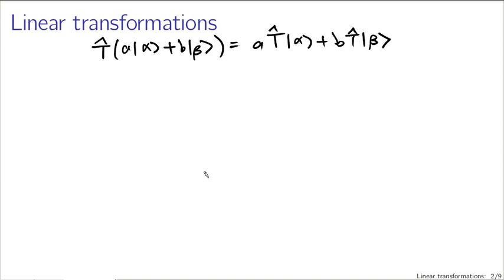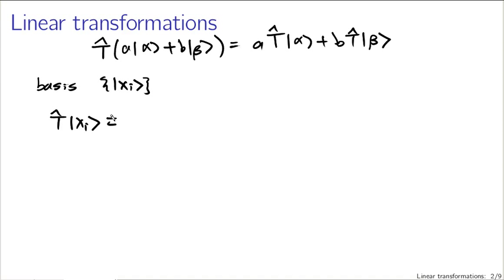It's difficult to work with transformations in general, so it's useful to consider what a transformation looks like when we have a vector in a particular basis. Suppose I have a set of basis vectors x sub i — I'm not specifying how large this set is. If we apply our transformation to the basis vector x sub i, say x sub 1 in particular, that transformation applied to a basis vector will be given by another vector expressed as a sum of basis vectors.